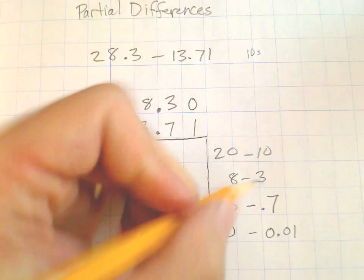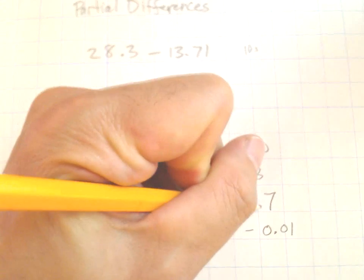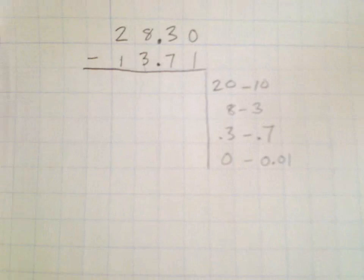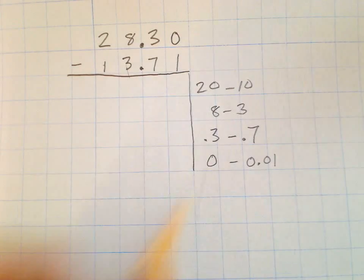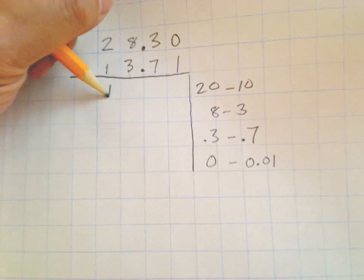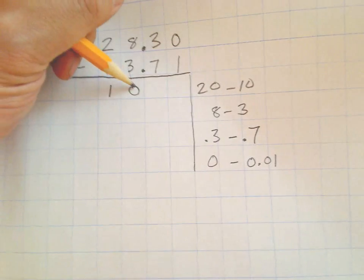Then here, 0 hundredths minus 1 hundredth, so we're gonna just basically say 0 minus .01. Some of these are going to be easy. 20 minus 10, well that's a piece of cake. Make sure your place values are lined up, and that's really just 10.